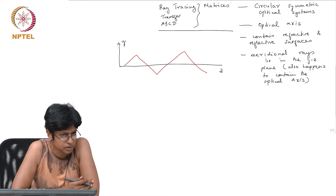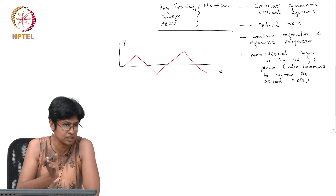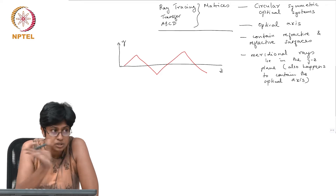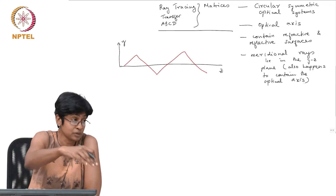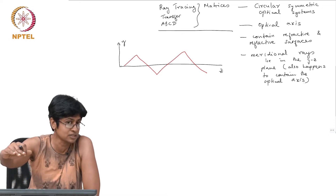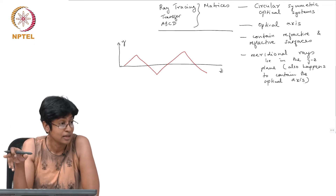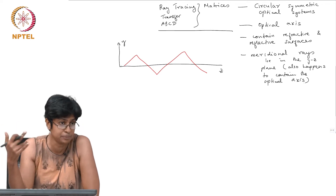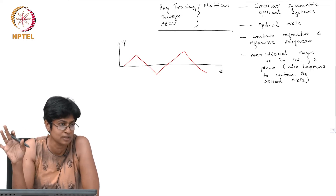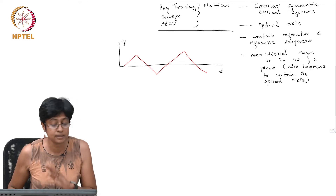You can have rays called skew rays and, as the name suggests, they do not travel in a plane but travel in a skewed fashion. You could imagine if you had a hollow cylinder and sent light into it, it would bounce around and you could not capture its entire path in one plane. You cannot use this matrix technique to trace skew rays, but with meridional rays we are dealing with rays that lie in one plane — the plane containing the optical axis.